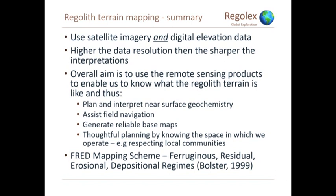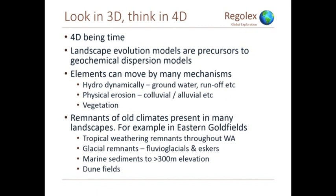Looking in 3D and thinking in 4D — with the fourth dimension being time. Landscape evolution models are always a precursor to geochemical dispersion models. As Fiona mentioned, elements are moving by various mechanisms: hydrodynamically, physical dispersion, all the effects of vegetation. In the eastern goldfields you've got remnants of old climates — glacial deposits out there, eskers down near Widjimutha, fluvial glacial deposits around Lancefield just north of Laverton still on the surface today. There are marine sediments with speculite beds found over 340 metres above present-day surface east of Norseman, and evidence around Kambalda of old marine sediments 280 metres above present-day surface. The landscape's gone through a long, long history.